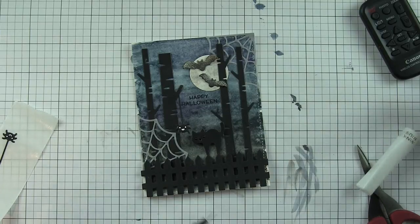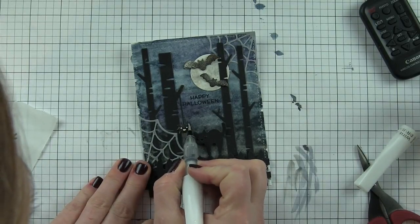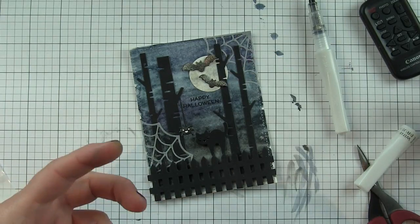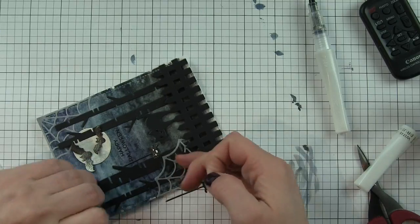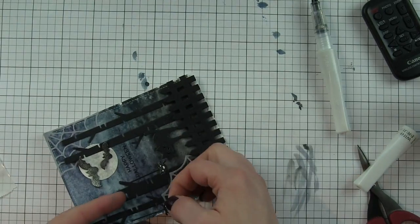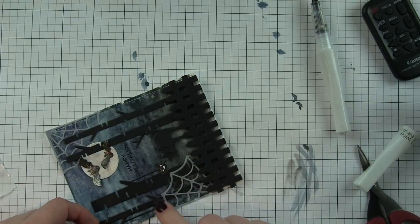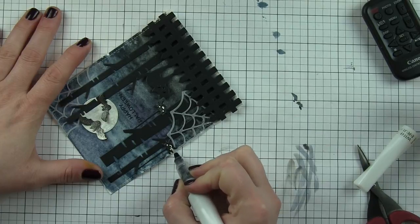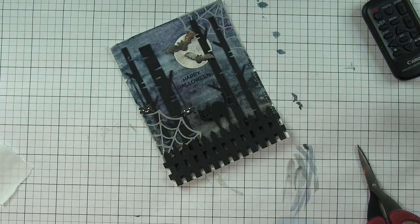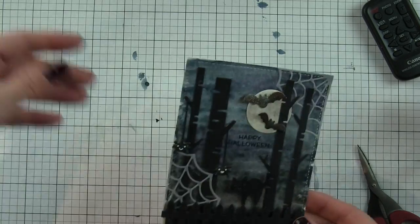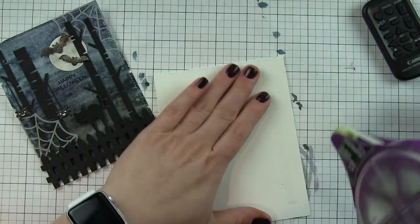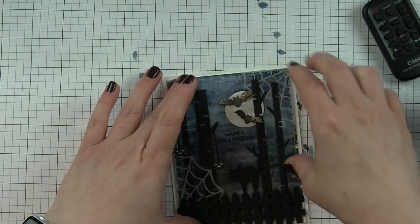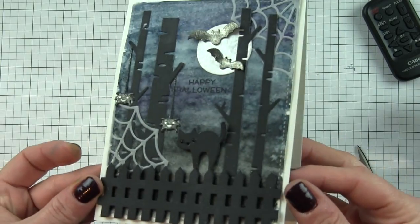I hope this card has inspired you to look at the dies that you have in your collection and maybe consider trying to create a card all out of die cuts. There are so many amazing ones out there now that it's super fun to try to find ways to create some awesome cards all out of dies. I did add a little Wink of Stella clear glitter brush pen to my spiders to help them stand out against the trees to make them a little bit sparkly and that is going to finish up my card. I will add this to a top fold card base and this spooky Halloween card featuring dies from Lawn Fawn is all finished.